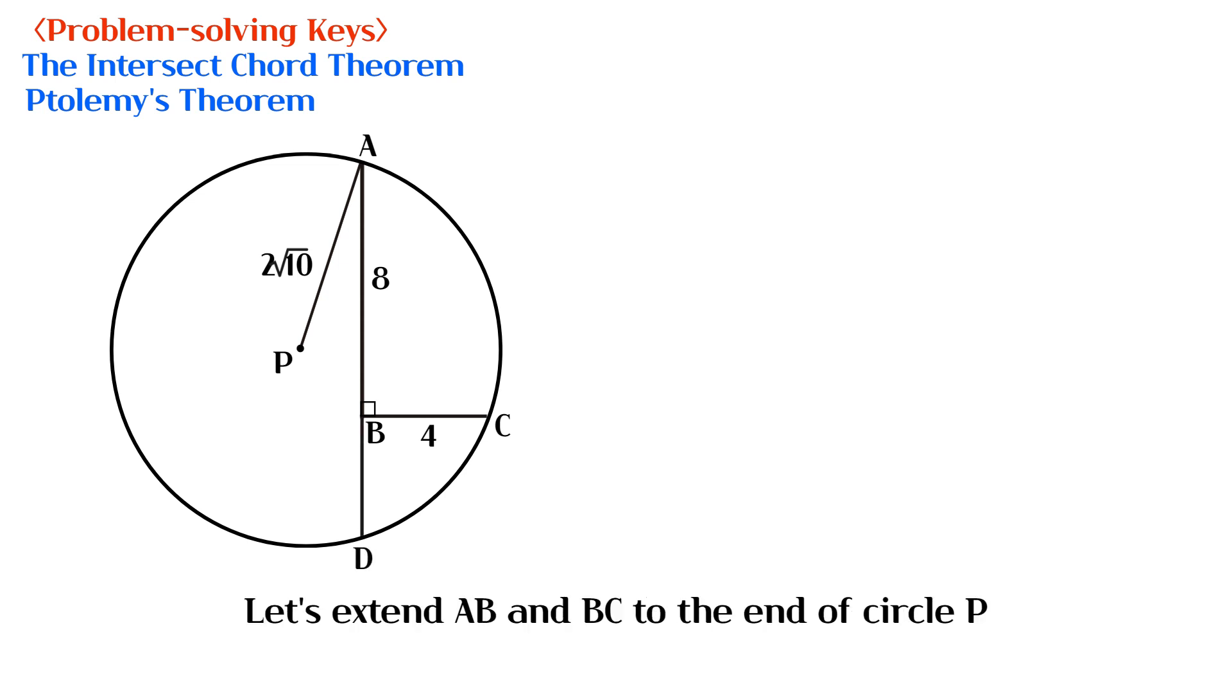Let's extend AB and BC to the end of circle P. Line segments AD and EC are chords of circle P, and two chords intersect inside a circle.